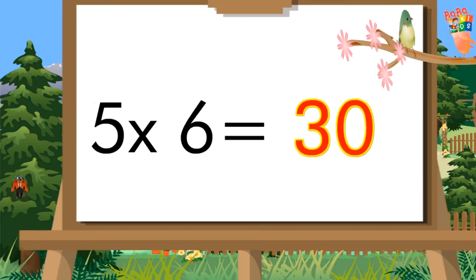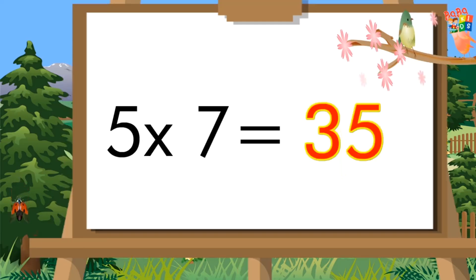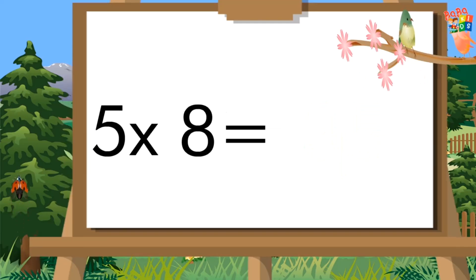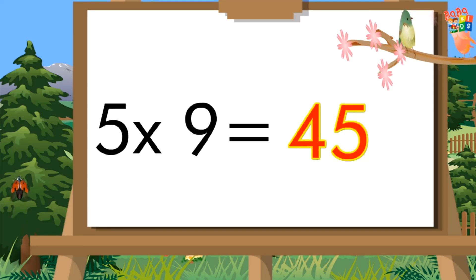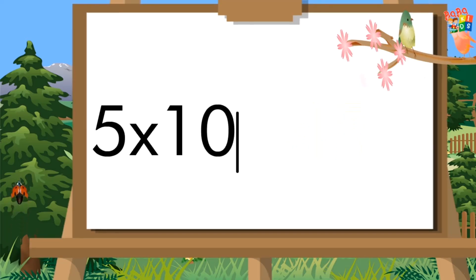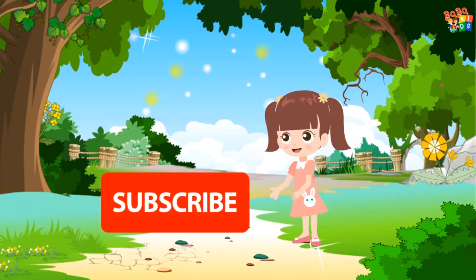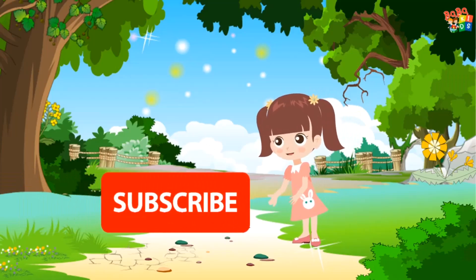Five, six's a thirty. Five, seven's a thirty-five. Five, eight's a forty. Five, nine's a forty-five. Five, ten's a fifty. Please like and subscribe. Thank you.